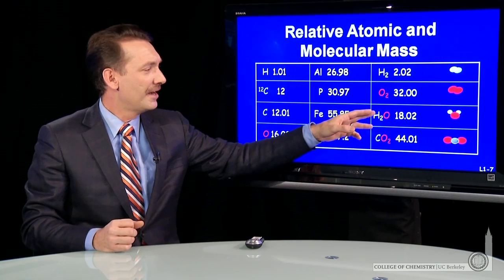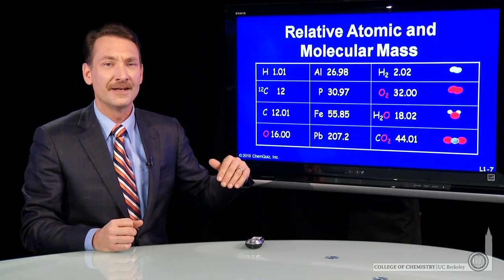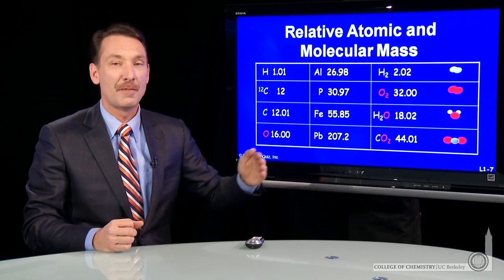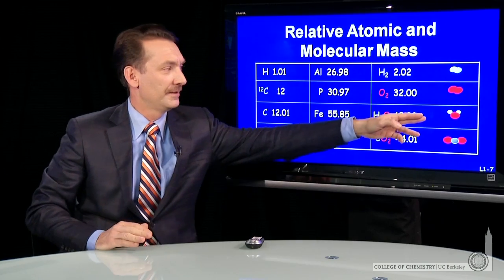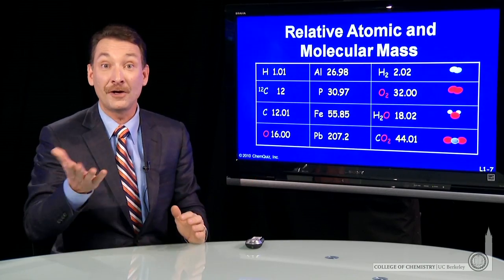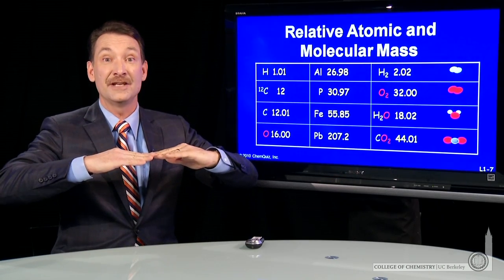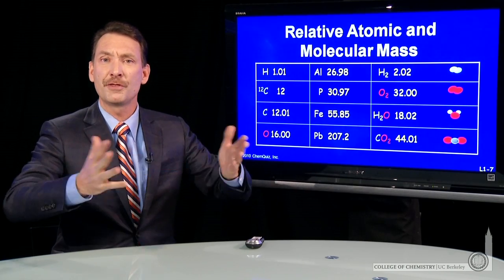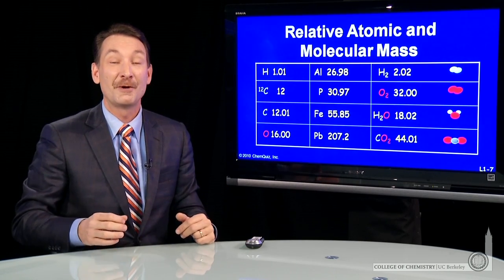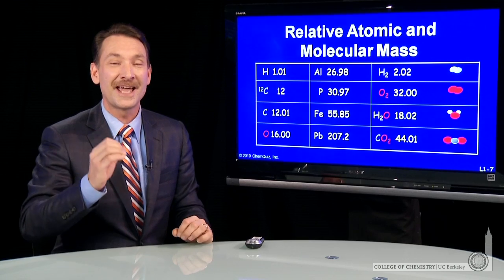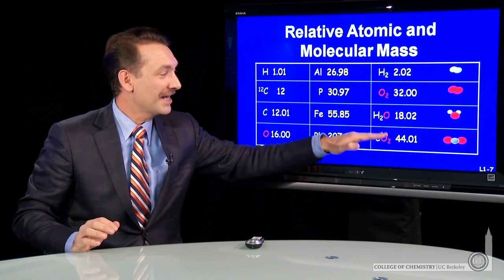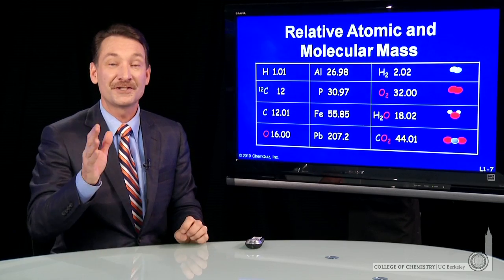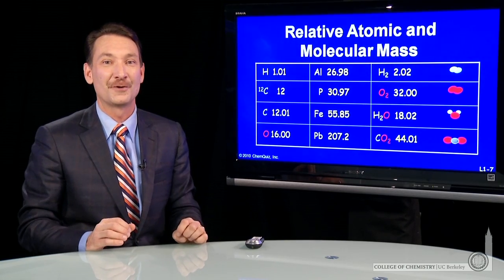When you look at water and carbon dioxide, I've written water — a three-atom molecule — as bent, and carbon dioxide — also a three-atom molecule — as linear. So how do I know one is bent and one is linear, both being three-atom molecules? That's the nature of the quantum mechanical interaction of the electrons that form the bonds in these molecules, and we'll study that in detail in this course.